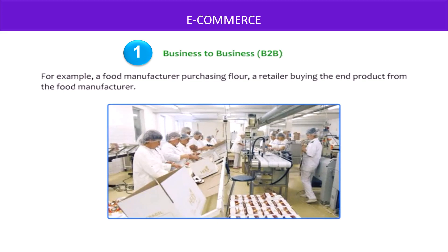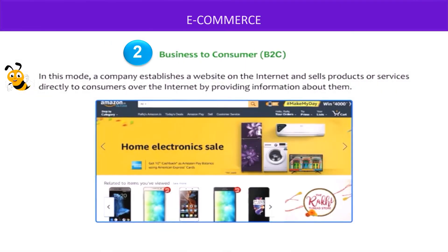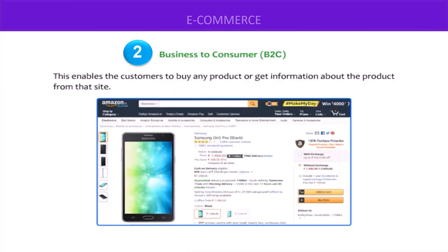The second mode is Business to Consumer, or B2C, and this is the most common type of e-commerce activity. In this mode, a company sets up a website on the internet and sells products or services directly to consumers over the internet by providing information about them. This makes it possible for consumers to buy any product or get information about the product from that site.